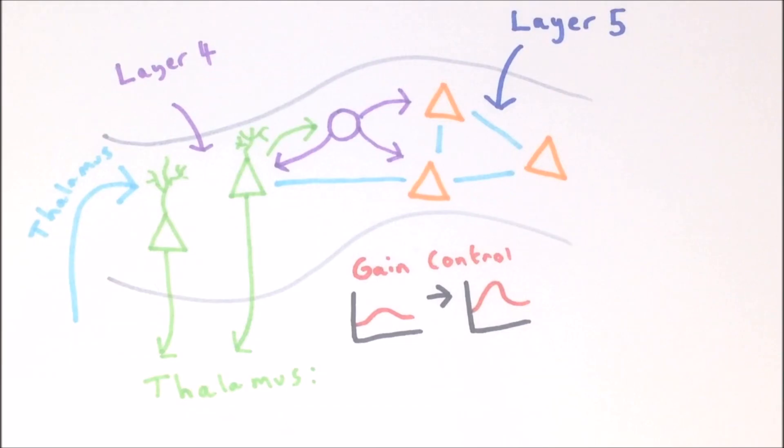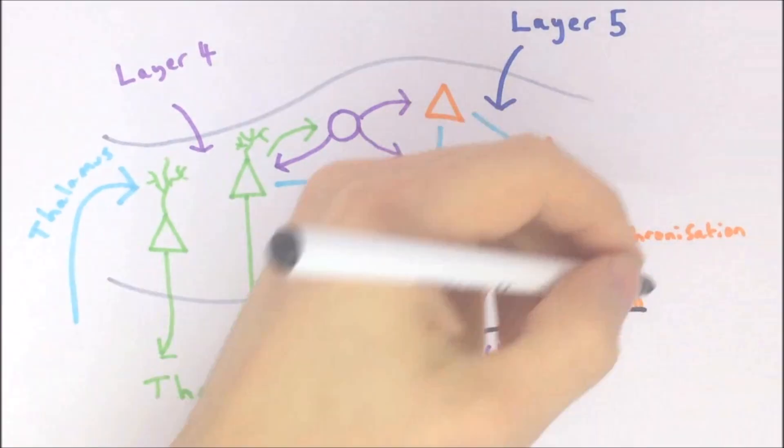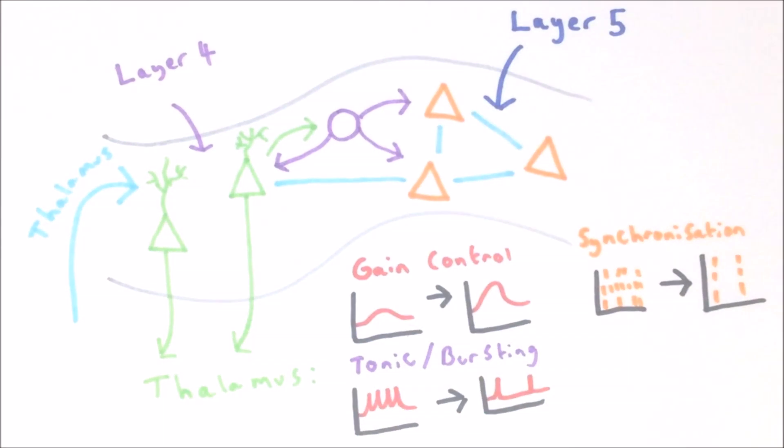These effects include: controlling the gain of thalamic neurons, making them respond more or less to incoming stimuli; switching thalamic neuron firing mode between bursting and tonic; and synchronizing the firing of thalamic neurons.